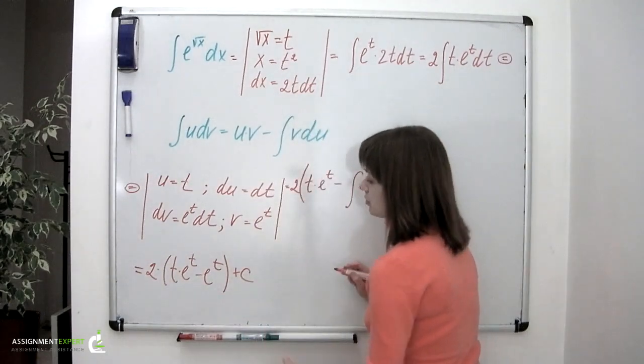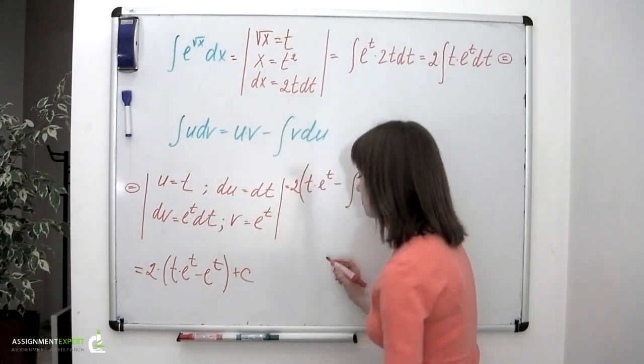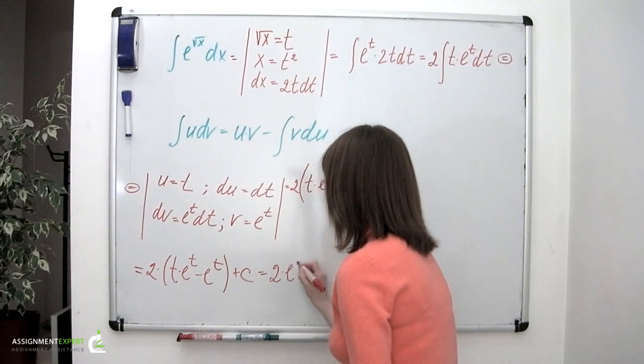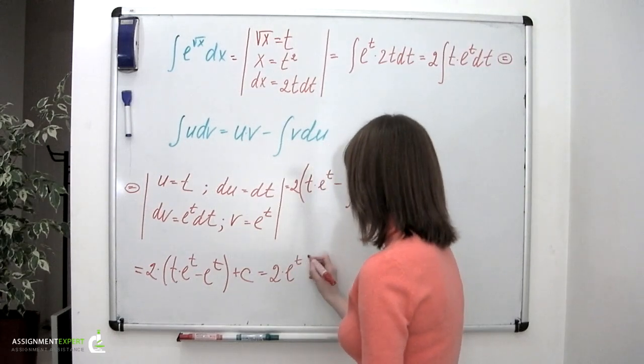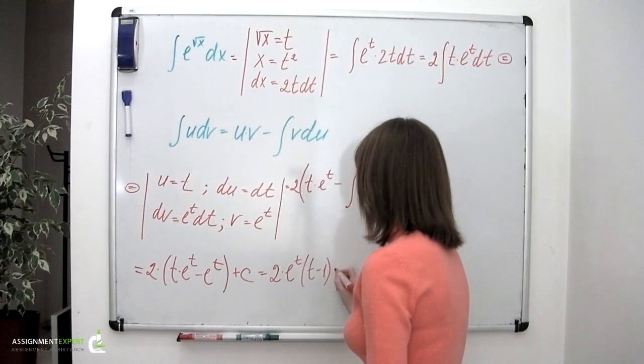We're going to also factor out this e to the t term. So we'll have 2 times e to the t times t minus 1 plus c.